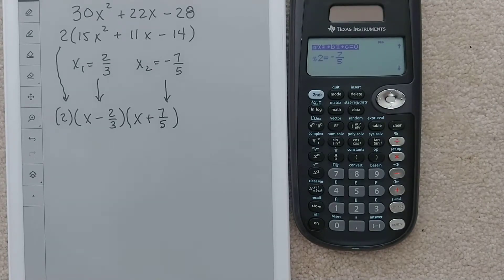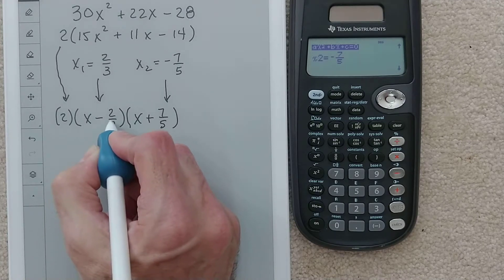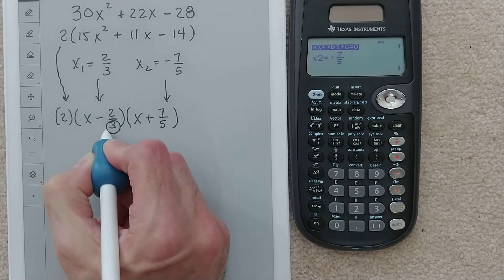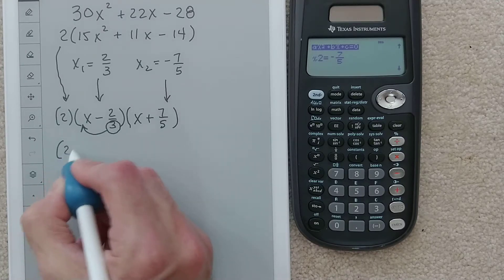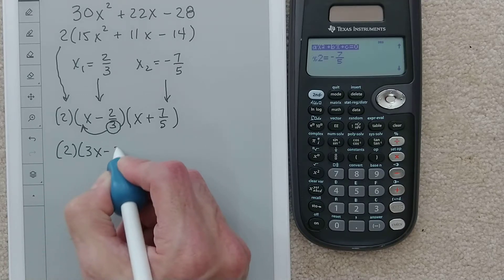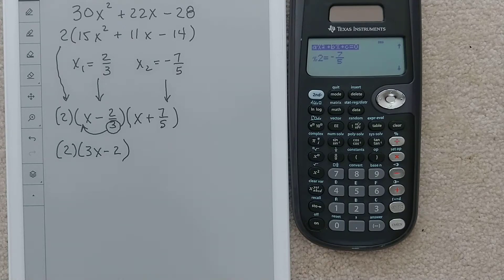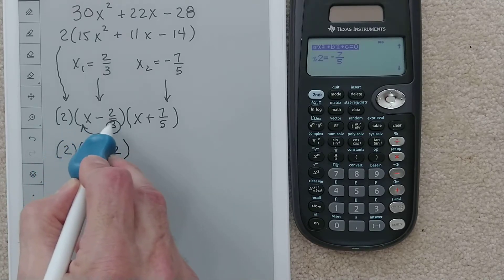Now this is where it's weird. If you ever get a fraction like this, we're going to take the denominator, 3 in this case, and move it out front of the x. So this 2 stays the same, that 3 comes out front of the x, and the numerator falls down, so it's 3x minus 2. You could think of it as multiplying both by 3, so this would be 3x, and then 3 would cancel with that 3 in the denominator, leaving negative 2.